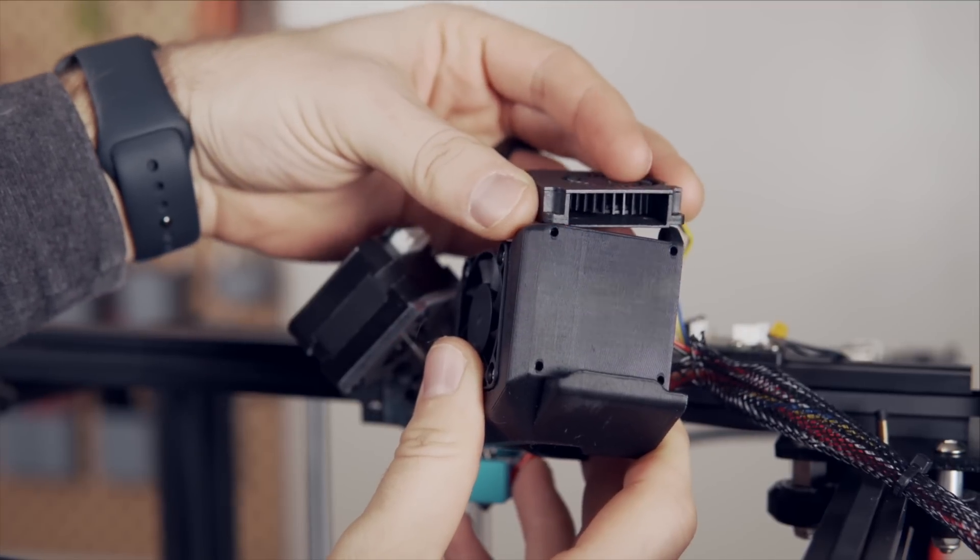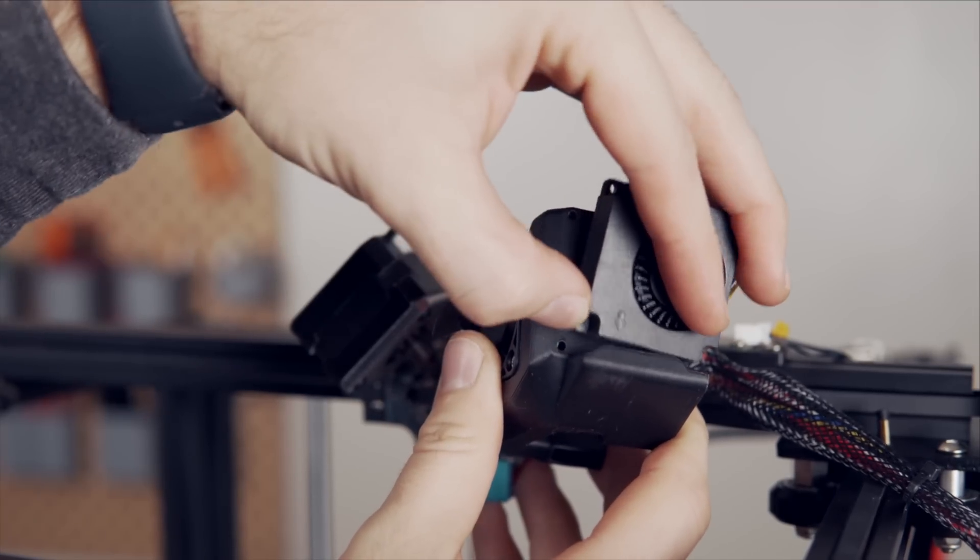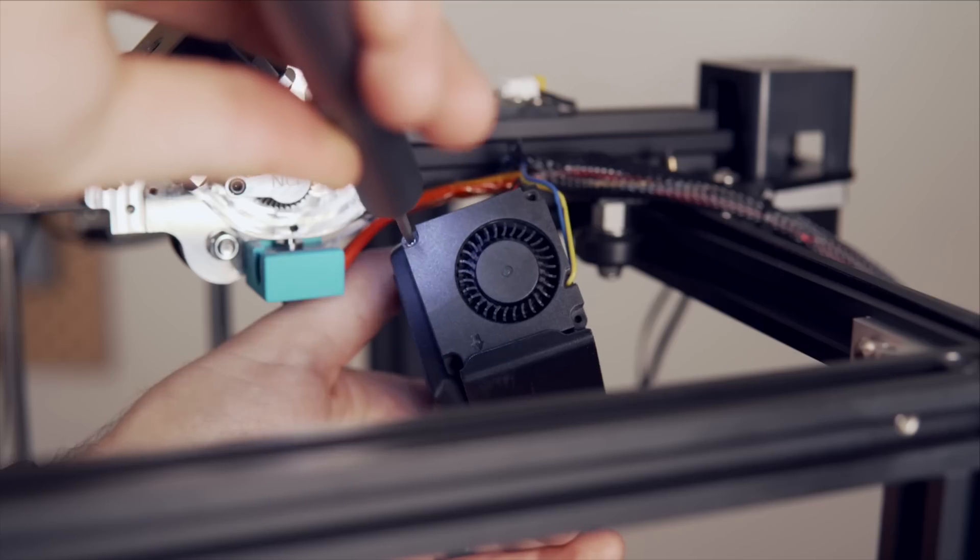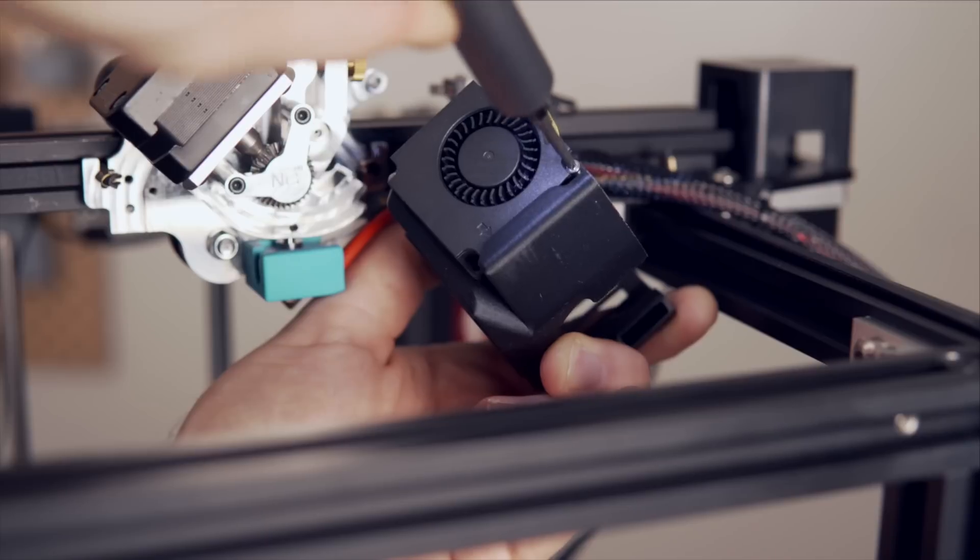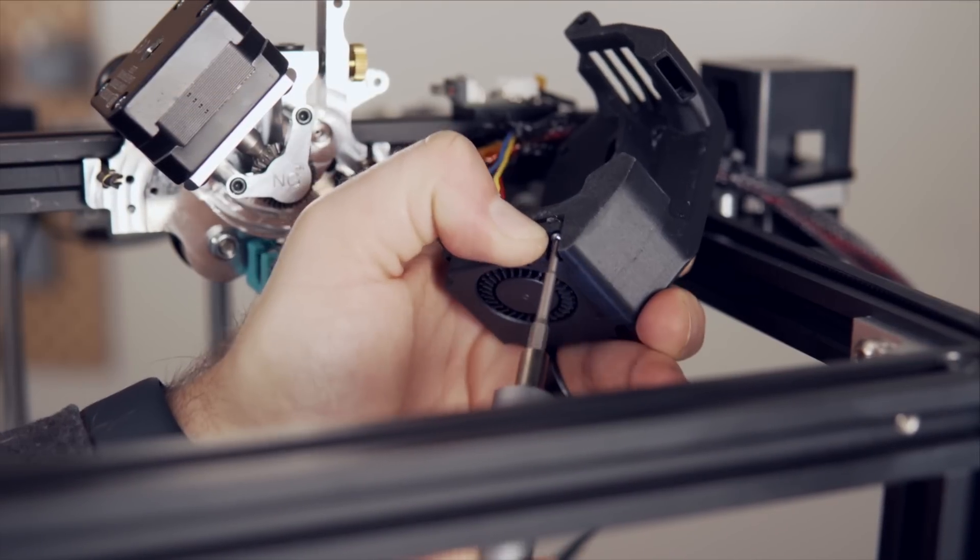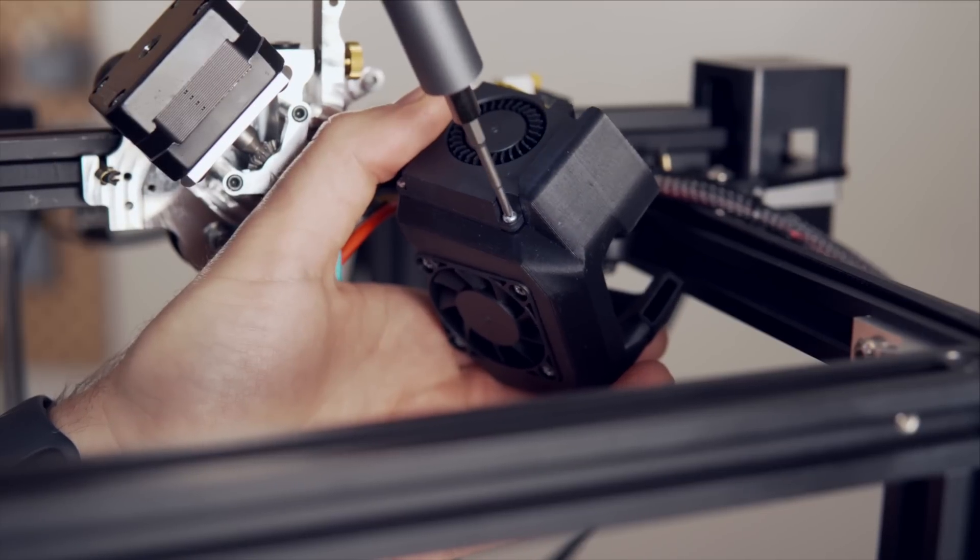Next, grab the layer cooling fan and that will slot into the right side of that fan housing or that fan shroud. It only goes in one direction, so you want the opening to go downwards. Then just like we did on the larger one, take the four smaller self-tapping screws and secure the fan in place.